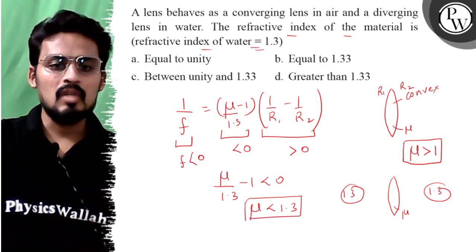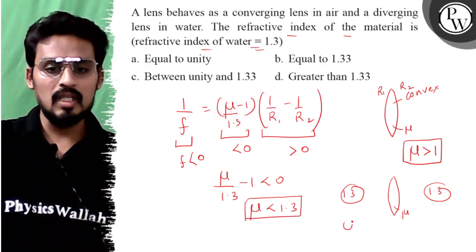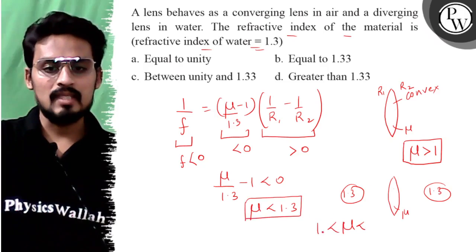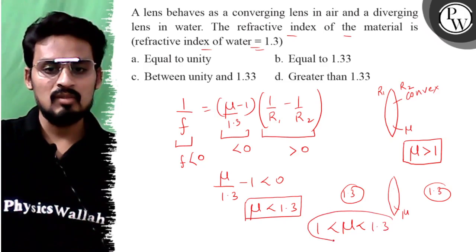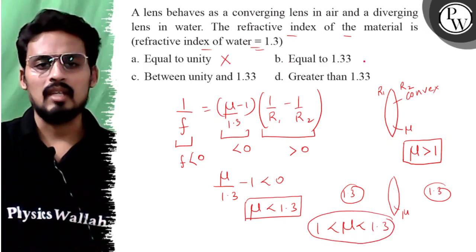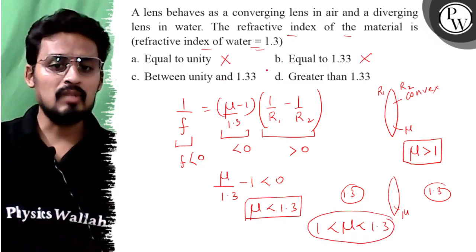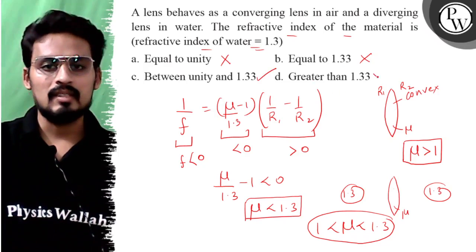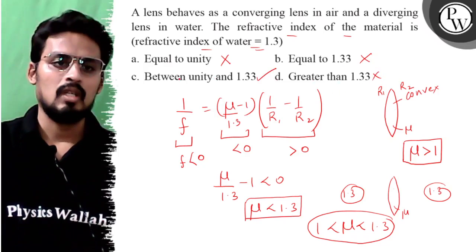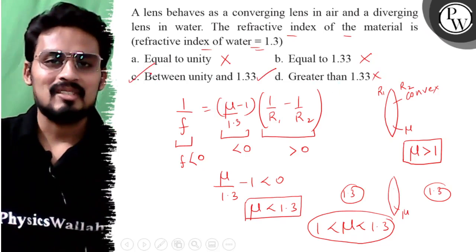So μ is greater than 1 but less than 1.3. Combining both conditions, we can write 1 < μ < 1.3. Now checking the options: equal to unity — wrong; equal to 1.3 — also wrong; between unity and 1.3 — yes; greater than 1.3 — no. Hence the correct answer is option C. All the best!